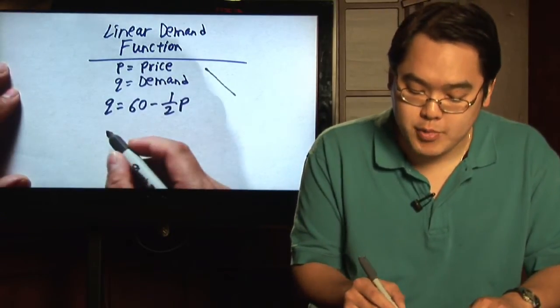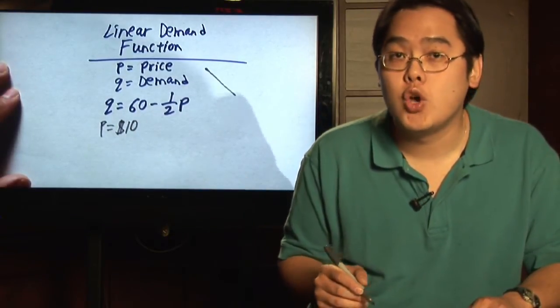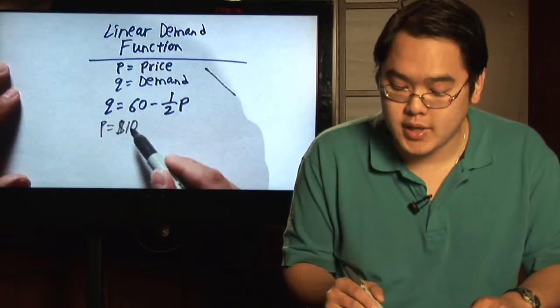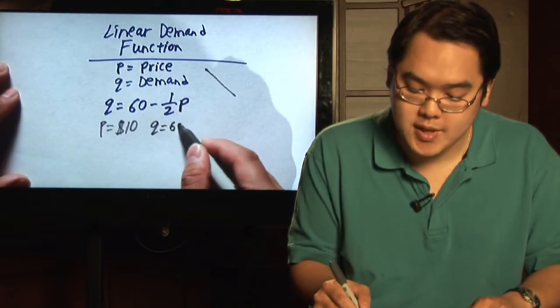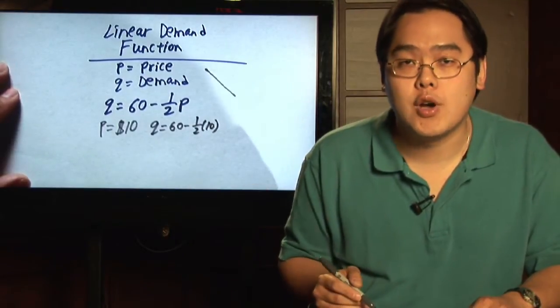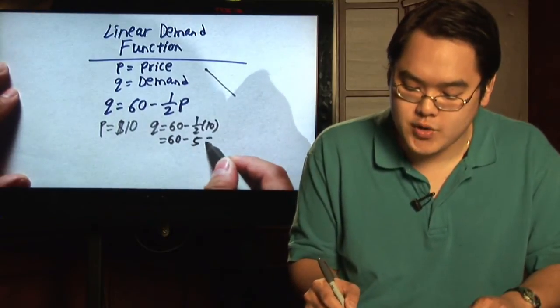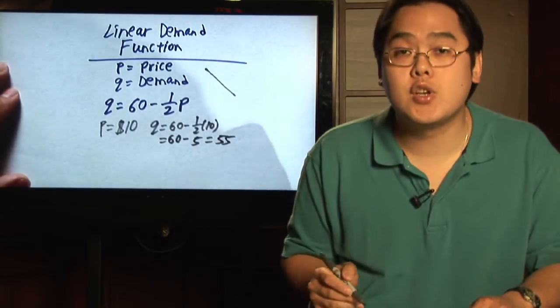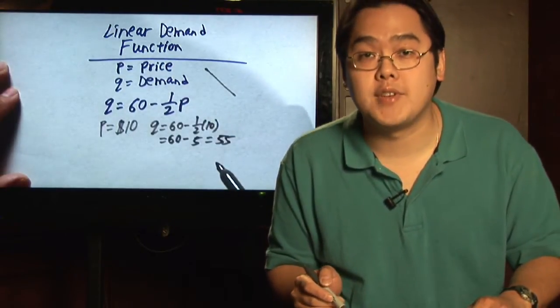For example, let's just say your price for this particular item was $10. What you would do to figure out the demand is you would plug in 10 where the P is. So you'll have Q equal to 60 minus one half times 10. As you know, one half of 10 is five. So you have 60 minus five, which is 55. So in this particular instance, when the price is $10, the demand will be 55 items.